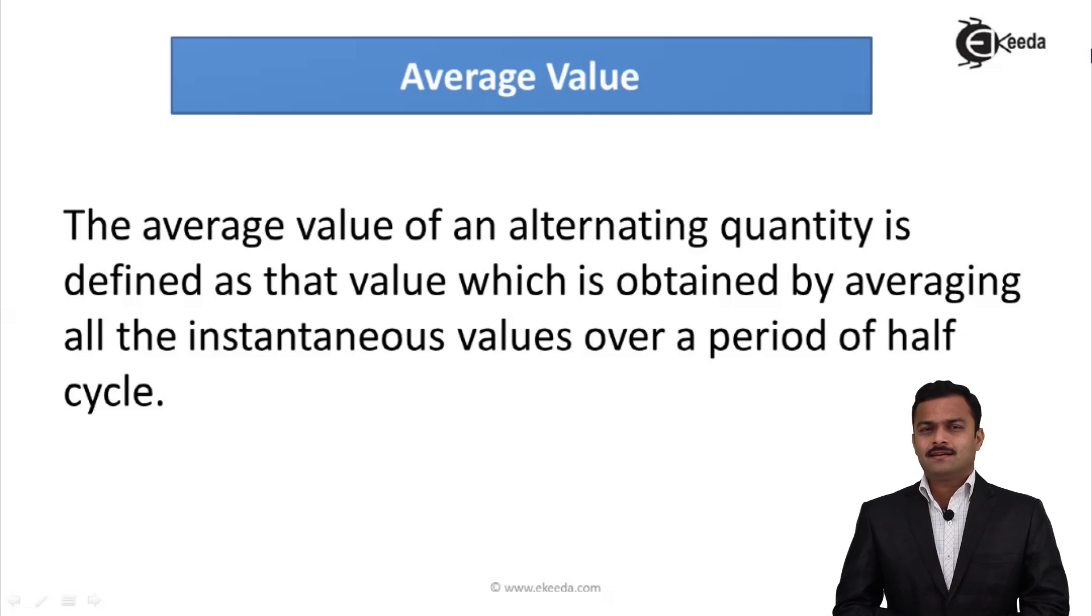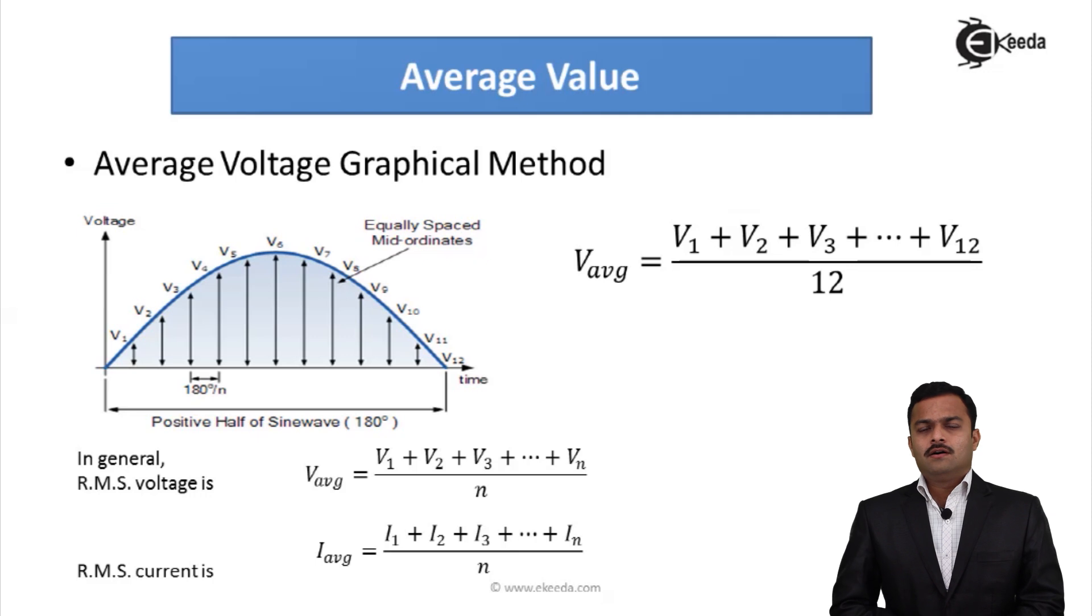So average value can be calculated by two ways: one is graphical and second is analytical. What graphical method is, I am considering a half cycle and in this half cycle I consider so many instances. Let's take 12 instances I have calculated, and for every instant I calculate the instantaneous value of current or voltage.